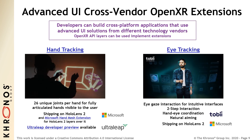In parallel with the first OpenXR implementations being shipped, OpenXR working group members have defined cross-vendor hand and eye tracking extensions for building advanced user interfaces. The hand tracking extension defines a hand articulation model that will be consistently exposed by OpenXR implementations, enabling applications to use sophisticated hand interactions that will be portable across vendors. The hand tracking extension is already shipping on the HoloLens 2, and UltraLeap also has a developer preview. The eye tracking extension has been developed by sensor vendors including Tobii, and will enable natural eye-gaze interactions. This extension is also already being shipped on HoloLens 2.